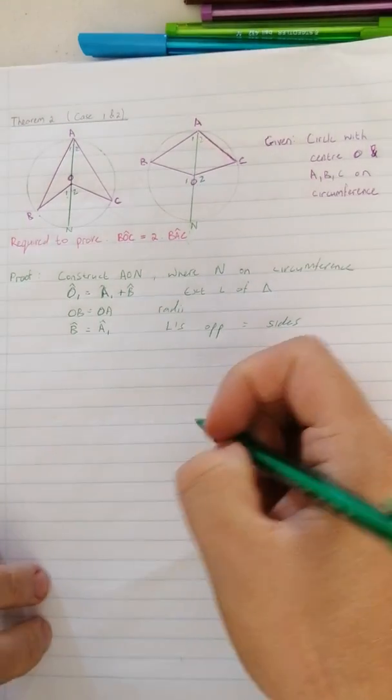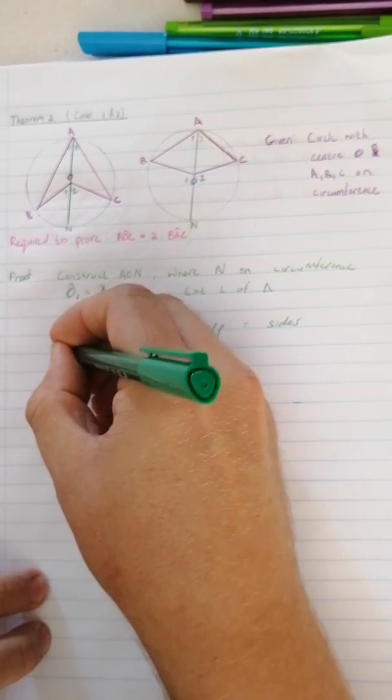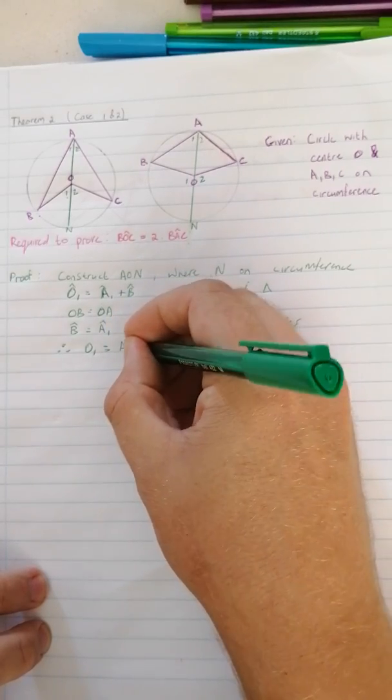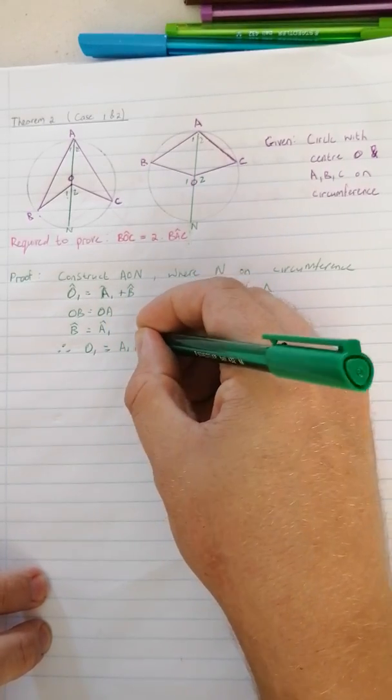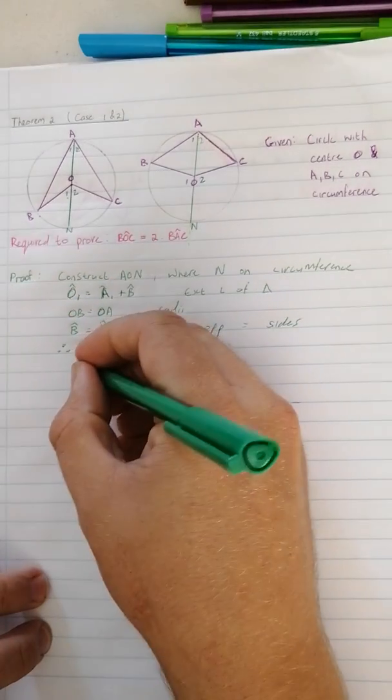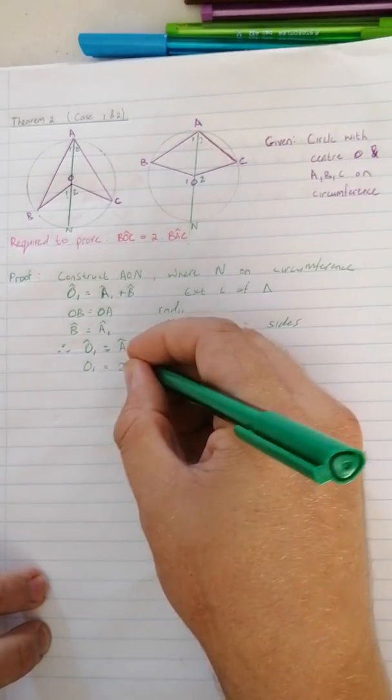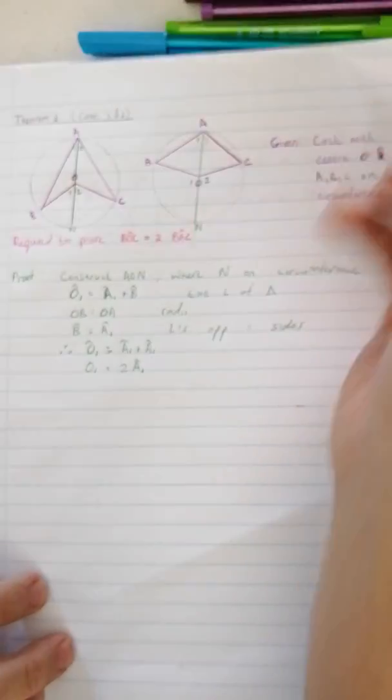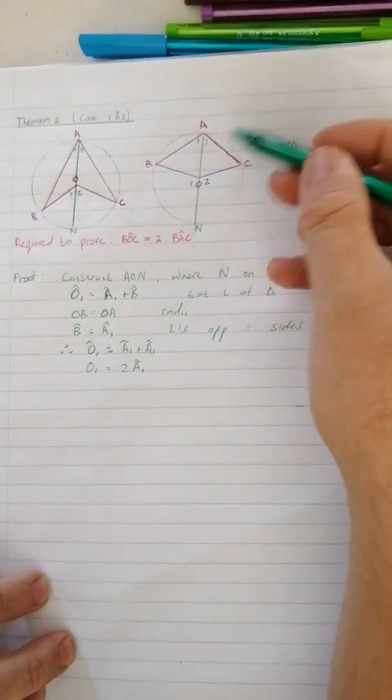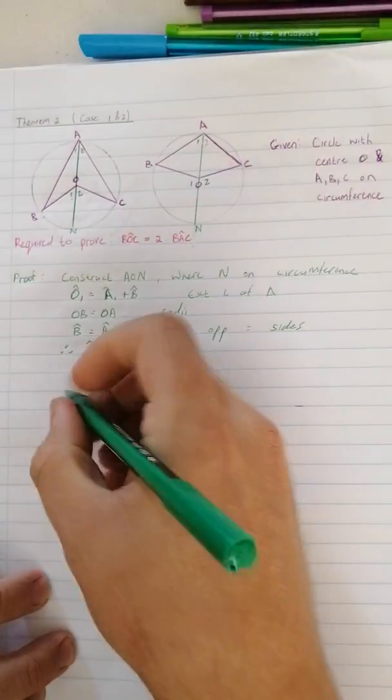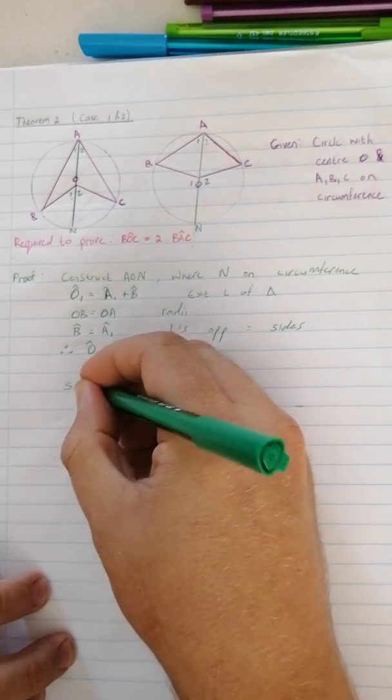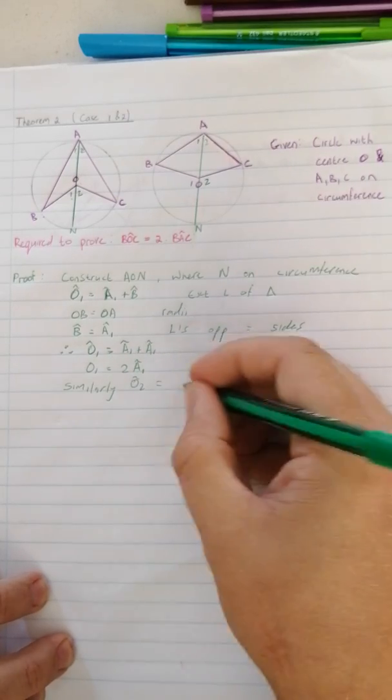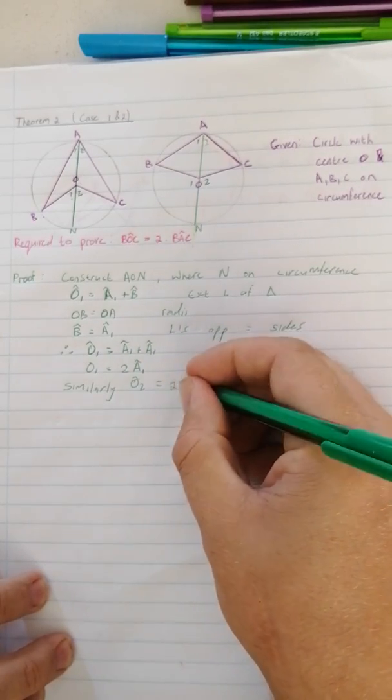And now immediately I can go and see therefore O1 equals A1 plus A1. So therefore O1 equals 2 times angle A1. And if we do exactly the same thing on the other side, it will work exactly the same. If you look at this right hand triangle it will be exactly the same. So we can say similarly O2 will be equal to 2A2.